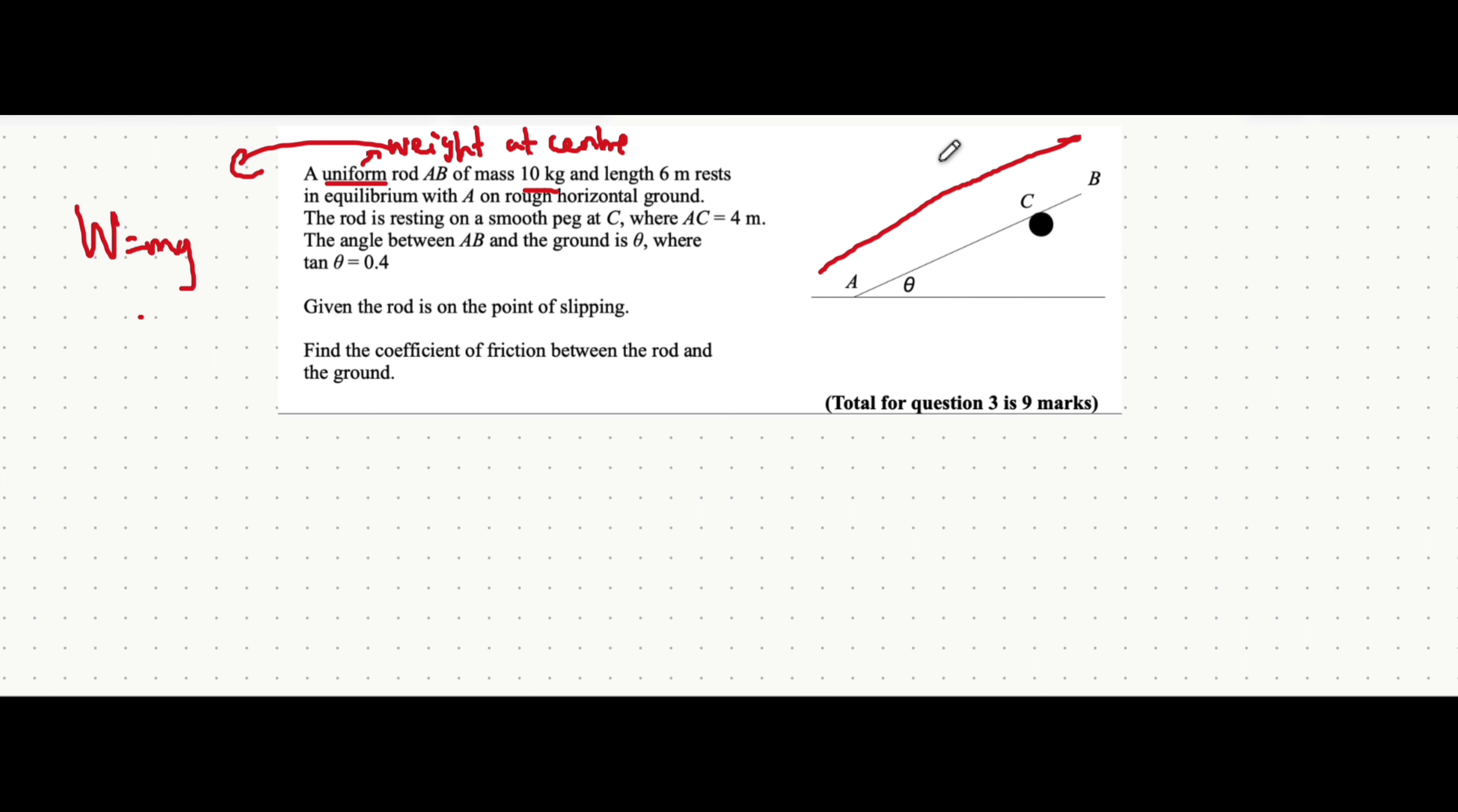That is six meters long. That means that three meters along the rod, there's weight acting vertically downwards and that's a weight of the mass of 10 multiplied by g, 9.81.